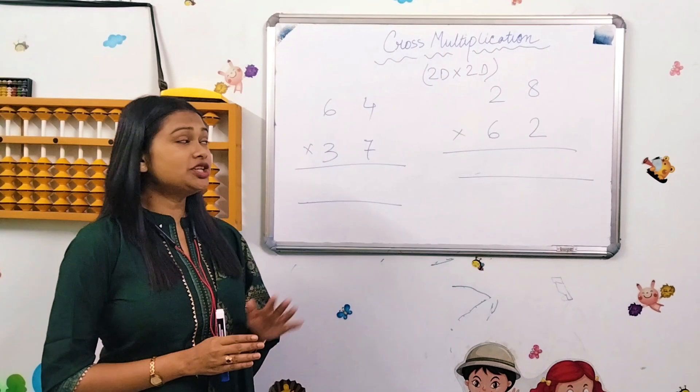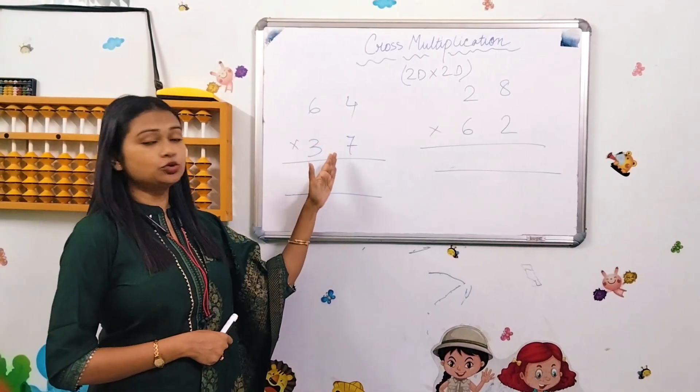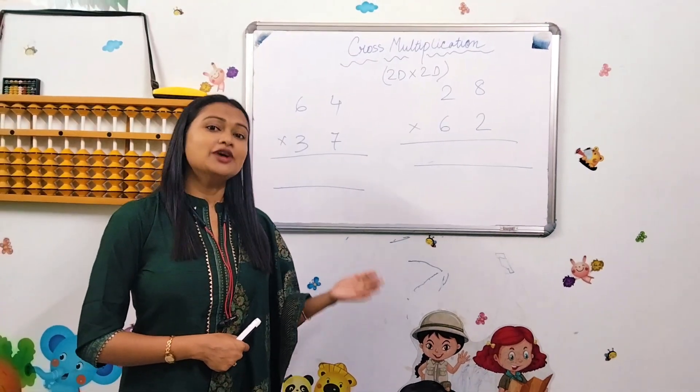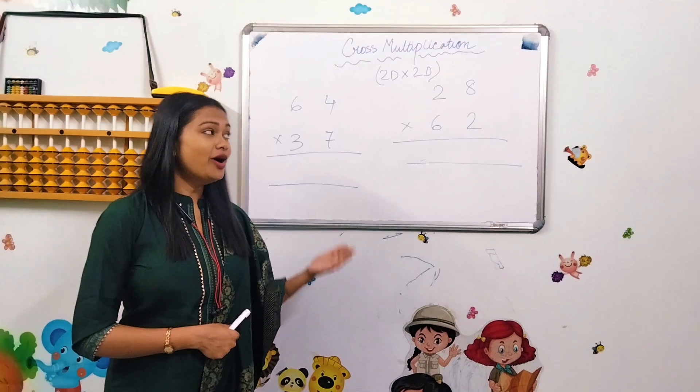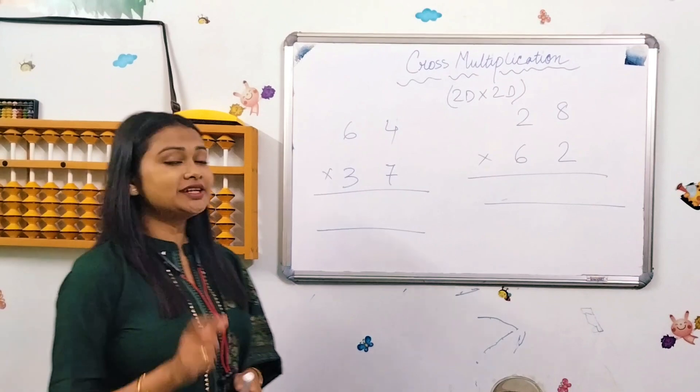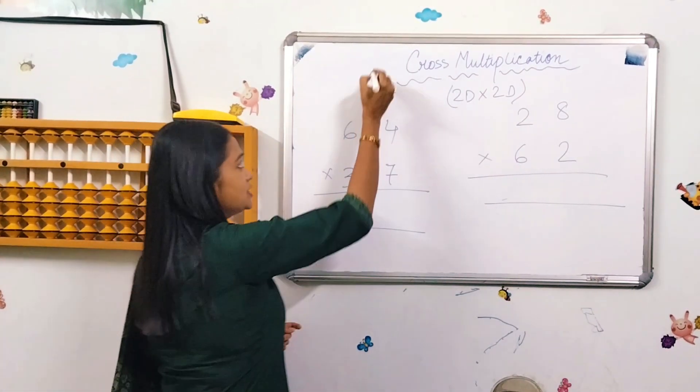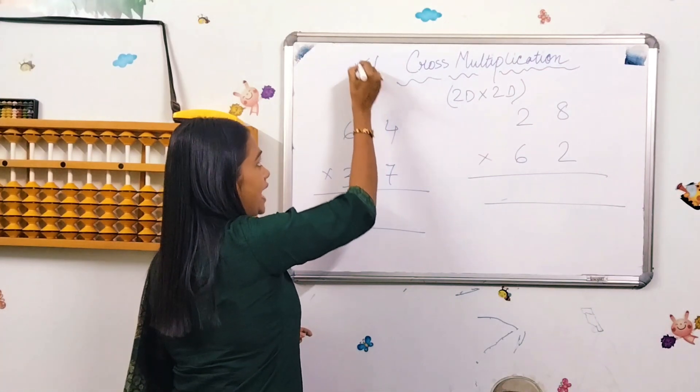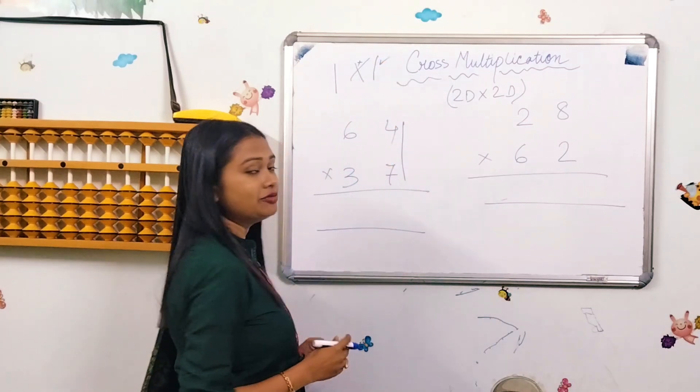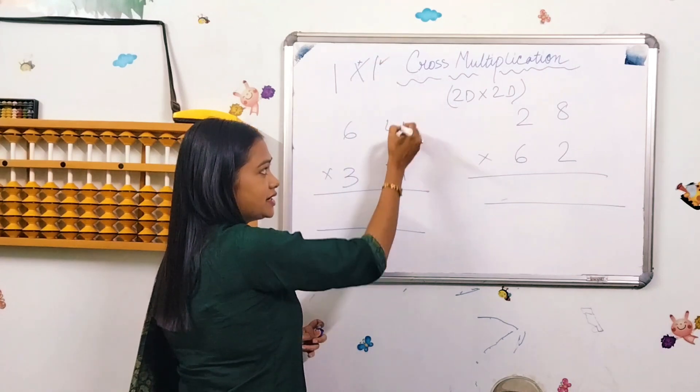Today we're going to do this process, the cross multiplication process. We will learn two digits into two digits. The cross multiplication is a sign: double digits into double digits, cross and addition. This line means these two numbers you have to multiply. This line means you have to multiply the last number with the last number.